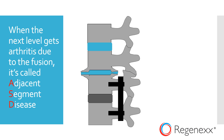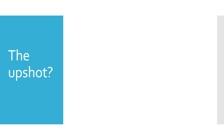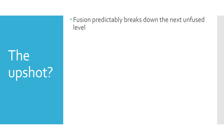As you can see here, you get bone spurs at that level that press on nerves, and the facet joint can get arthritis which can also press on nerves. Fusion predictably breaks down the next unfused level. This is called adjacent segment disease.